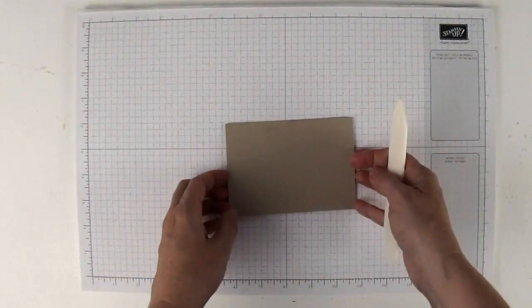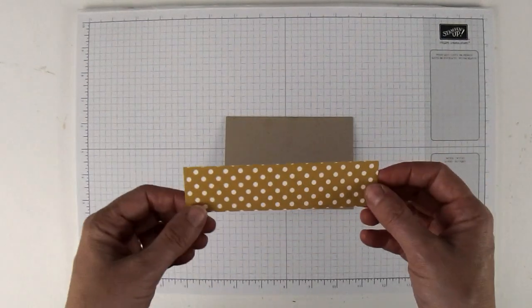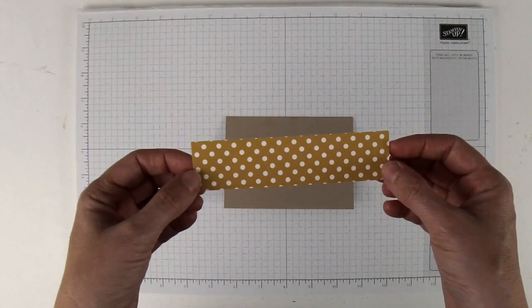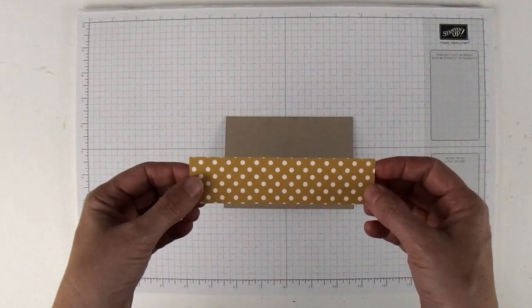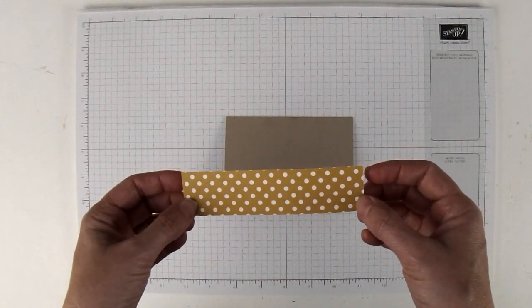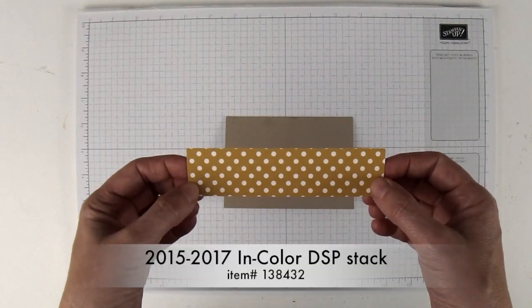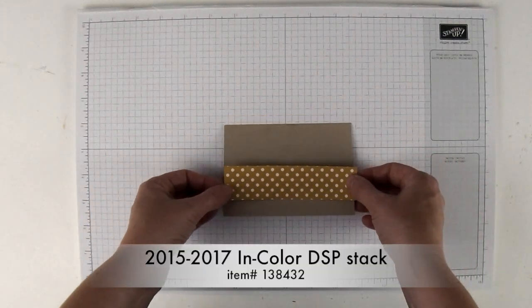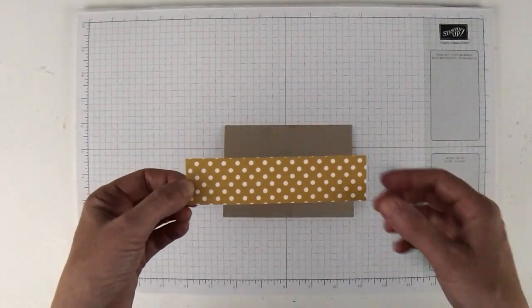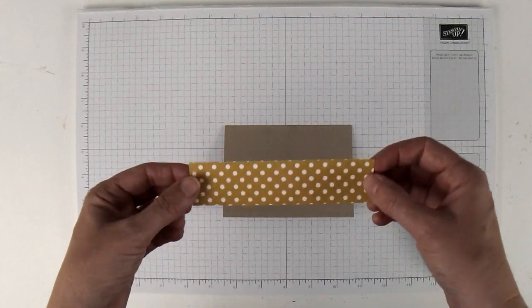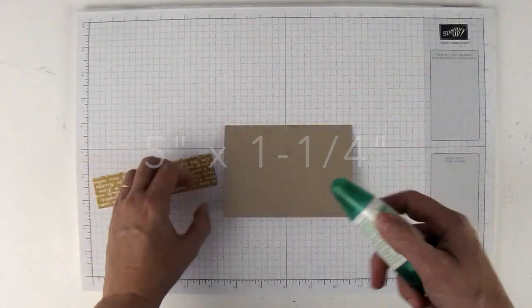We're going to need a piece of designer series paper. I forgot to buy the paper that matched with the fall themed products, so I was looking through my paper stash and I found that the 2015-2017 in colors had some really great fall colors. I picked this polka dotted side and cut it to five inches by one and a quarter inches.